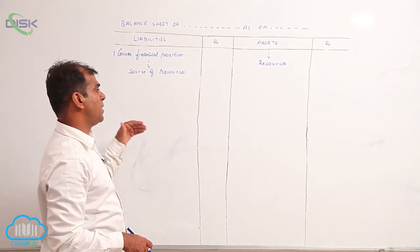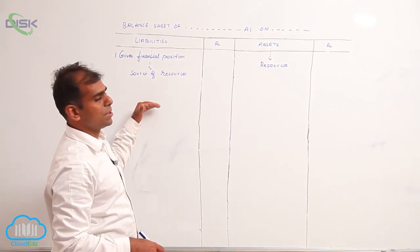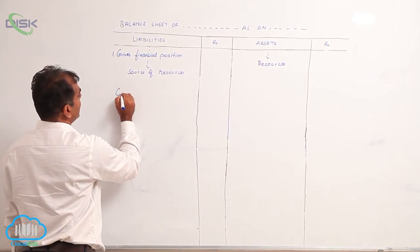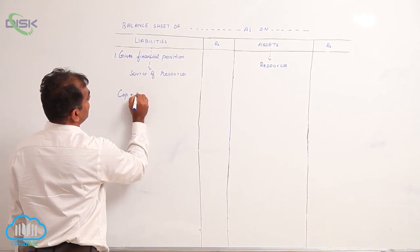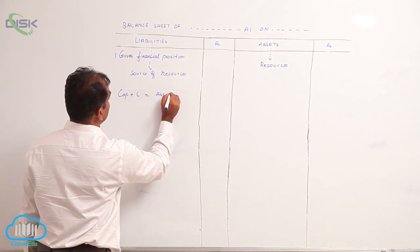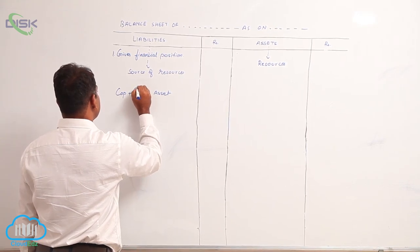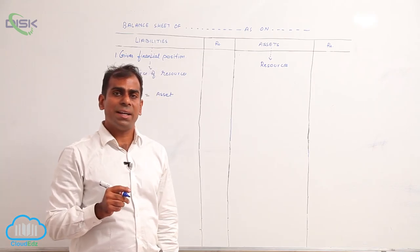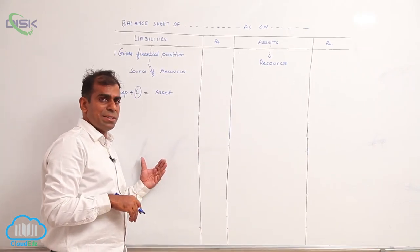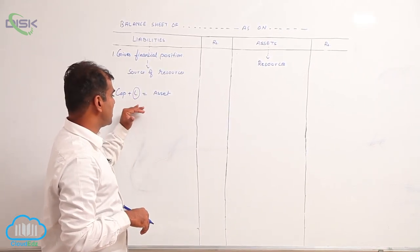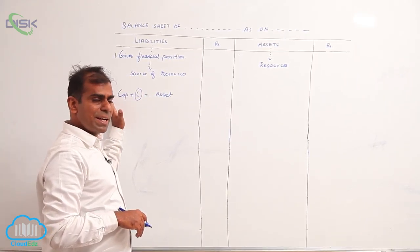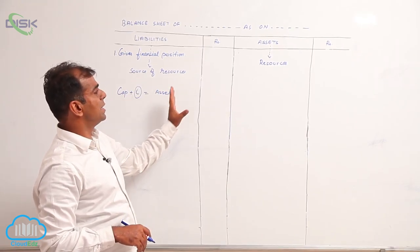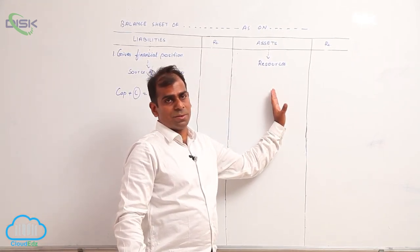Next, it gives you information of how much the business owes to outsiders because in the accounting equation you learnt that capital plus liabilities are equal to assets. This liabilities is representing the amount which business has to give to outsiders. So, looking at your balance sheet on the liability side, you can say how much is the owner's money and how much is the outsider's money involved in the financing of these resources.